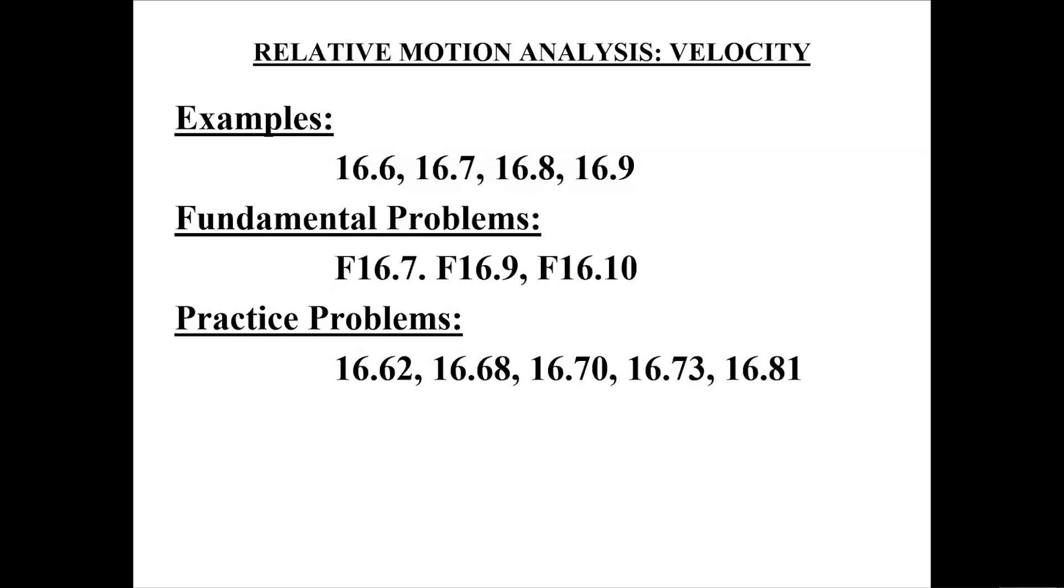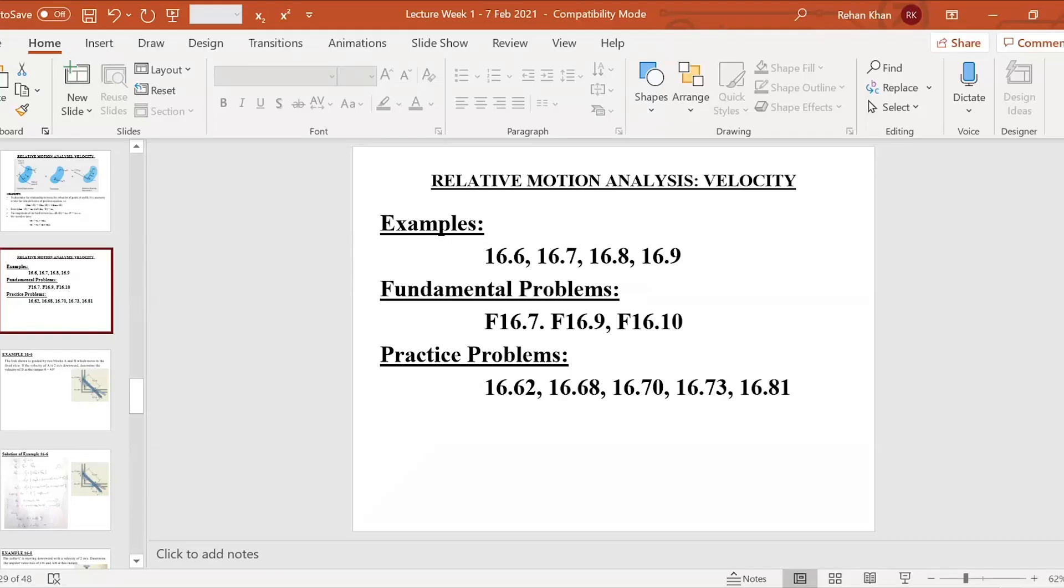For a rigid body undergoing general plane motion, we apply the relative velocity equation. This equation is of the form V_B equals V_A plus omega cross r. We need to make one of the points of that rigid body as our base point on which basis we analyze that rigid body.